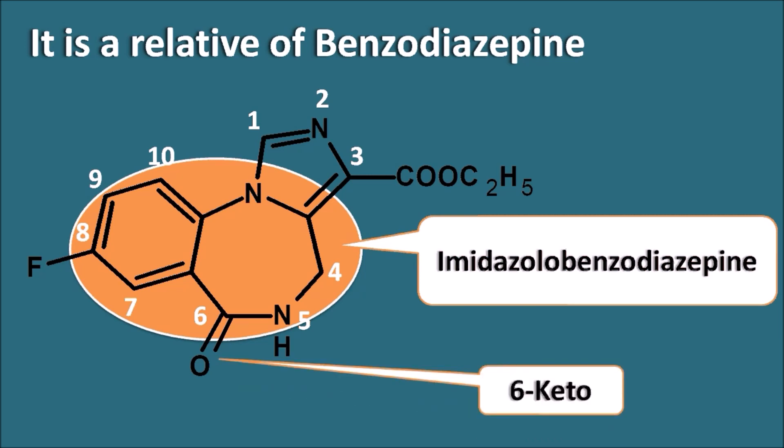In this way Flumazenil is a structural relative of the benzodiazepine, but it acts as an antagonist where benzodiazepines act as agonists. So that's why Flumazenil can be used as an antidote for the benzodiazepines.